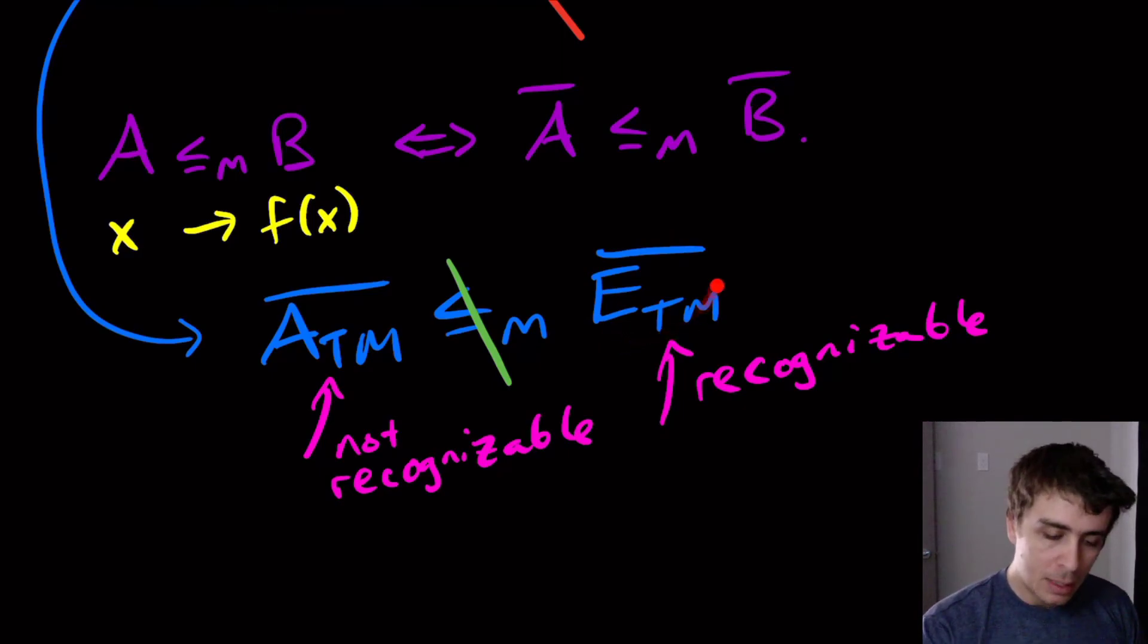It's because if there was such a reduction, then I could take some input over here and then run it through the recognizer over here.